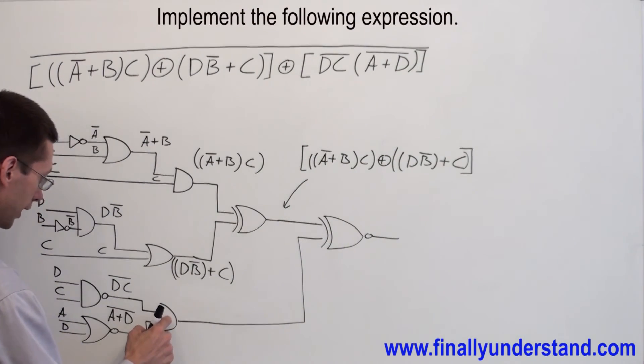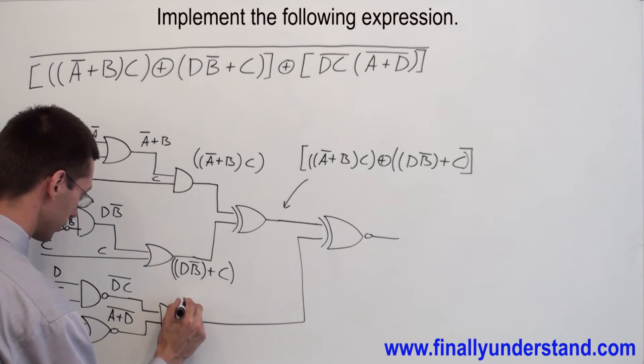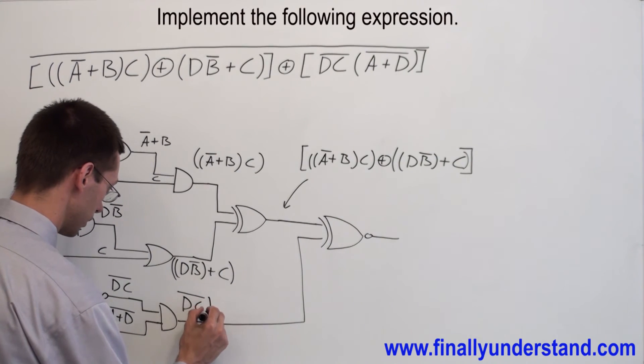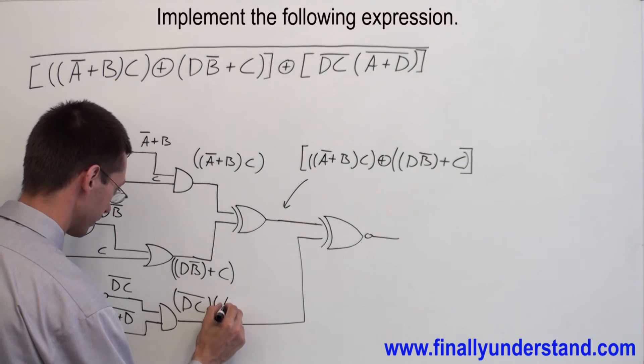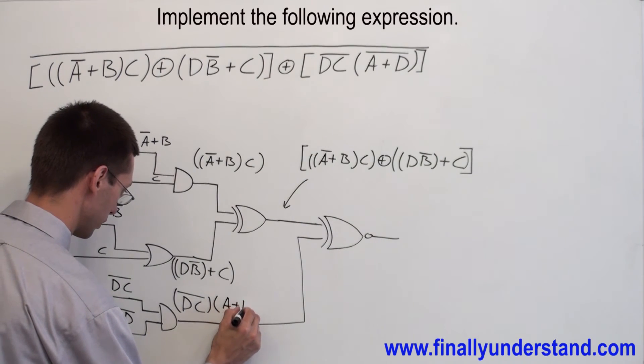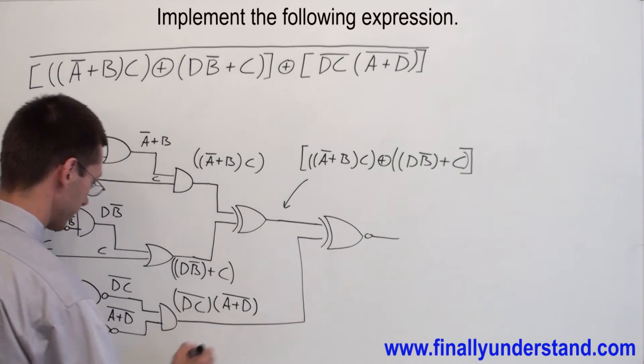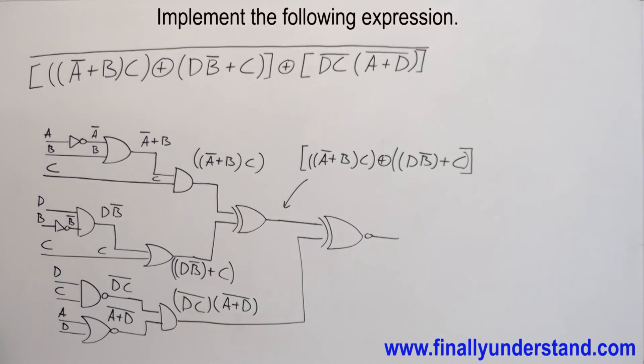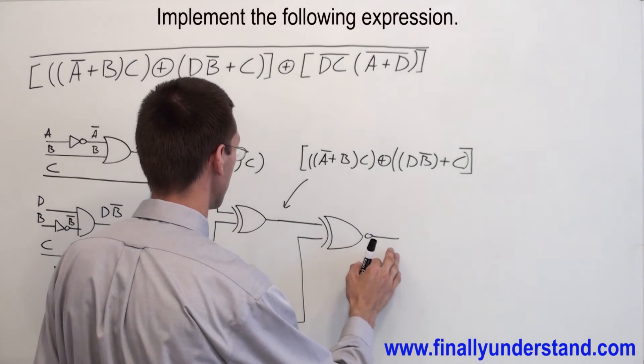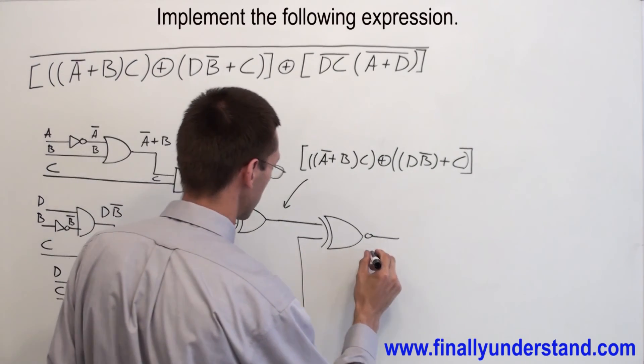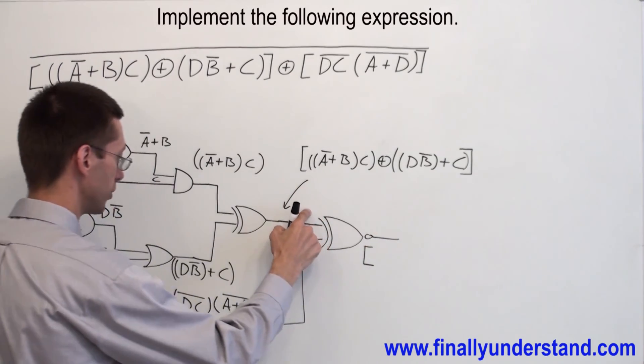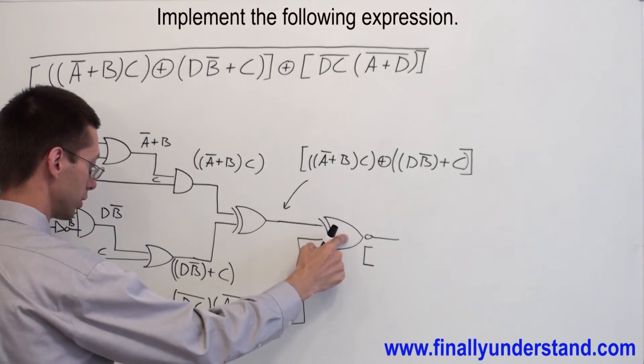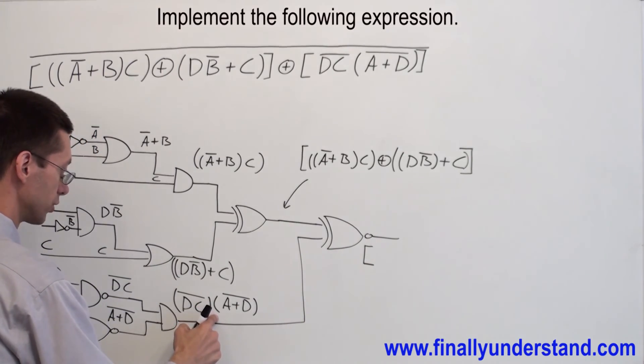At the output of the NAND gate, I'm going to have D, C NAND, ANDed with the NOR gate. Now I'm going to have the final answer looking like this.